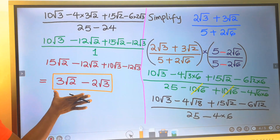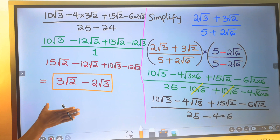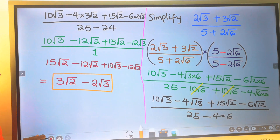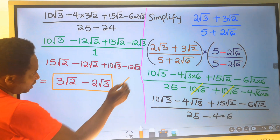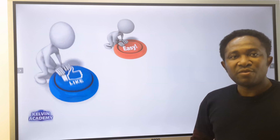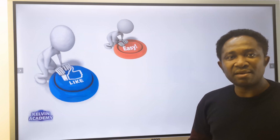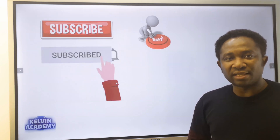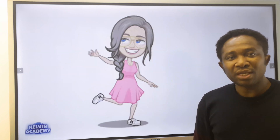We cannot simplify this further. We have eliminated the irrational numbers from the denominator, and this is our final result. If you find this video helpful, please click the like button. Also, subscribe for more videos like this. I will see you in the next video.